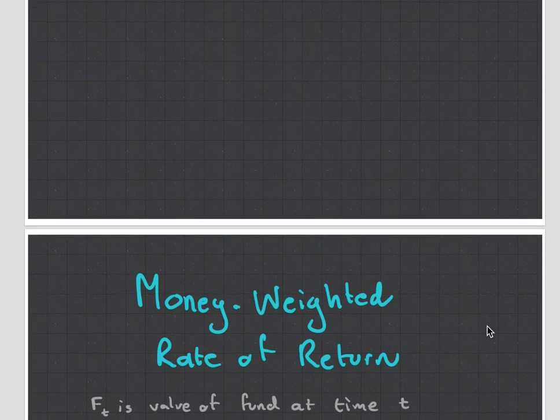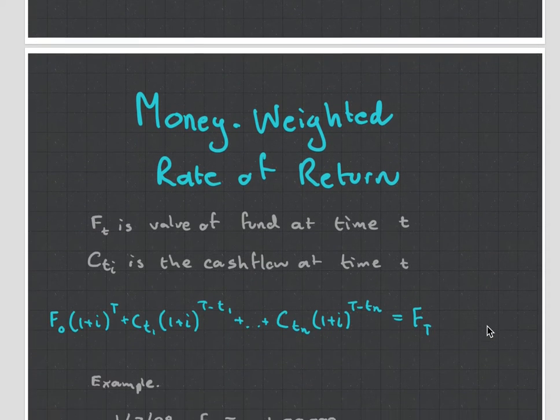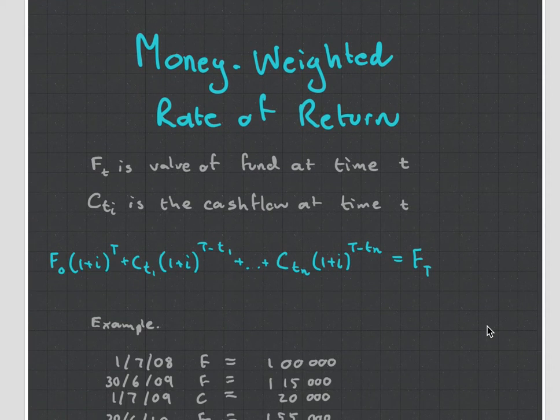I do want to move on to the various rates of returns. Rates of returns are used to calculate and rank asset managers and to see who made the most money, who was the best investor. So we're going to be looking at the money weighted rate of return, the time weighted rate of return, and then the linked rate of return.